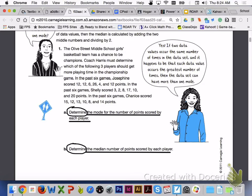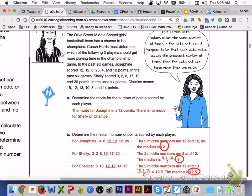Please answer letters A and B with your group members. For letter A, the mode for Josephine is 12 points, and there is no mode for Shelly or Shanice.